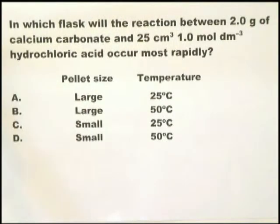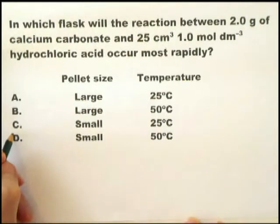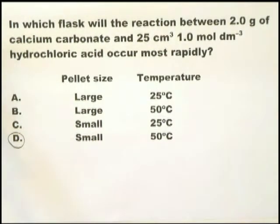This question is very similar to the previous one. You're given pellet sizes — large and small — and two different temperatures: 25°C and 50°C. Under what circumstances will the reaction occur fastest? You know the pellet size has to be small and the temperature has to be high, and that brings you to option D. Again, a question that shouldn't take more than 10 or 15 seconds.